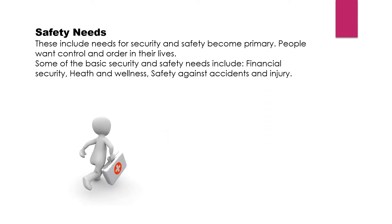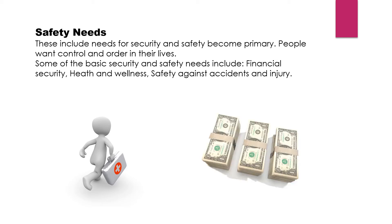The second level is safety needs. This includes needs for security and safety, which become primary — people want control and order in their life. Some basic safety needs include financial security, health and wellness, and safety against accidents and injury. Safety needs come after physiological needs are met, and include health benefits which can be used in uncertain accidents.